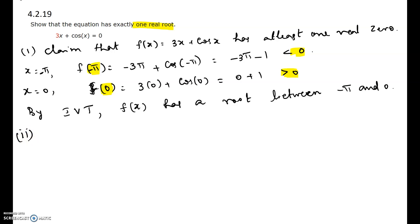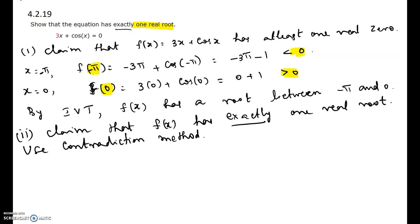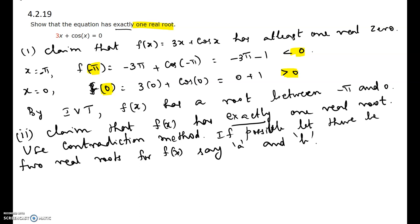The next part is to show that it has exactly one real root, which is what the problem is asking us to do. This part we are going to do by contradiction. For the contradiction method we will assume the opposite of f(x) having exactly one real root. So, if possible, let there be two real roots — we will call them a and b. Being roots of f(x), this means f(a) = 0 and also f(b) = 0.